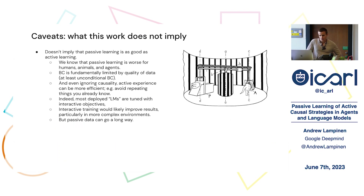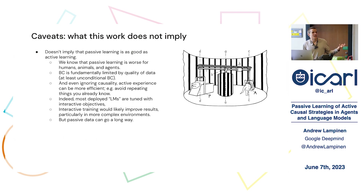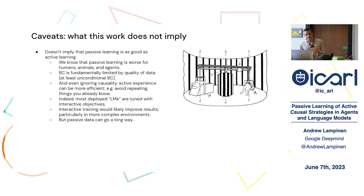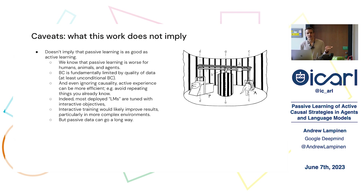Before we go to questions, I want to highlight some caveats. First, this work doesn't imply that passive learning is as good as active learning — that's just definitely not true. There are experiments with humans, animals, and RL agents showing passive learning is worse. BC is fundamentally limited by how good the data you're training on is. There are also various reasons passive learning is not as good — for example, you might have to repeat things you already know, whereas if you're actively learning you could seek out things you don't know. Most deployed language models are tuned with interactive objectives like RL feedback, and interactive training would likely improve results on these tasks, especially in more complex environments. The point of this paper is really just to highlight that passive learning can go a surprisingly long way.